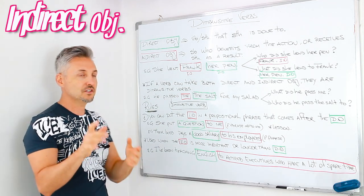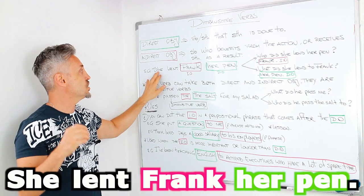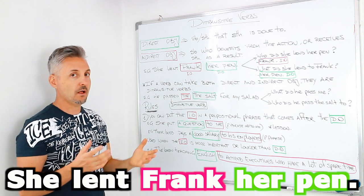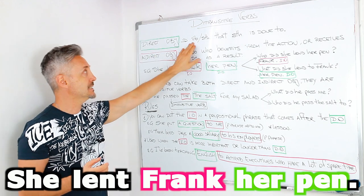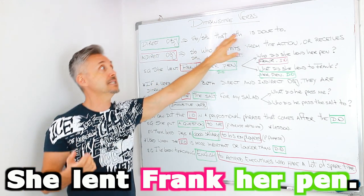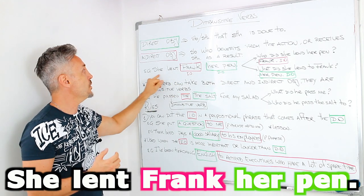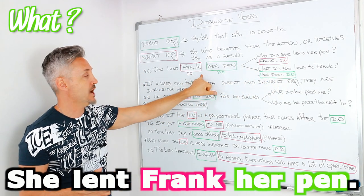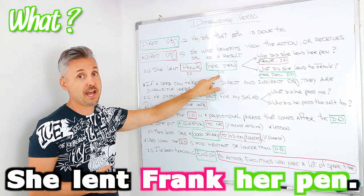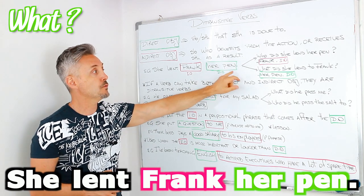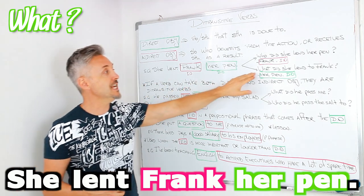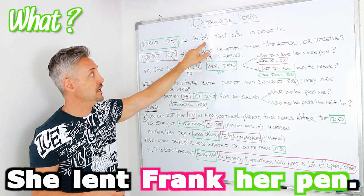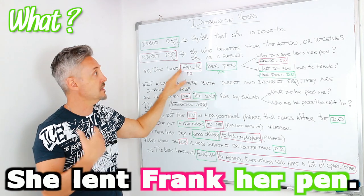Let's take a look at an example to better understand. She lent Frank her pen. We said that a direct object is somebody or something that something is done to. So in this case, we have to ask: what did she lend to Frank? And that would be the direct object — her pen. Her pen is something that something is done to.